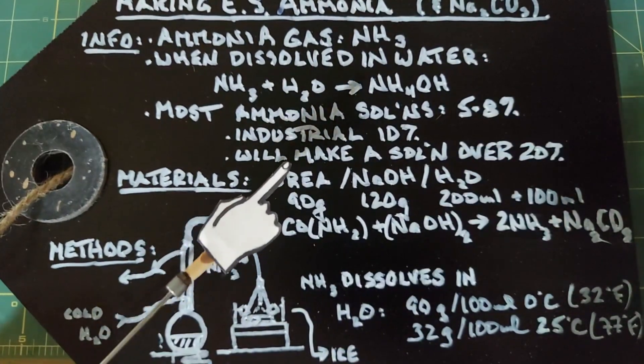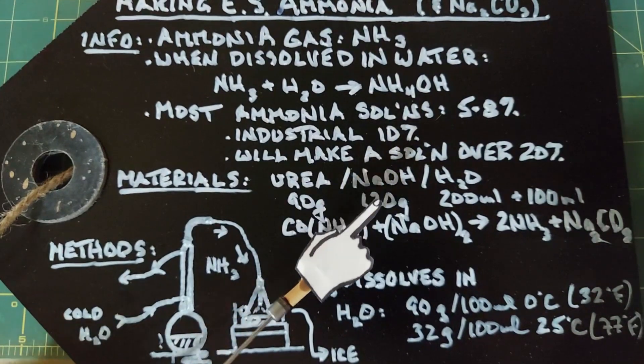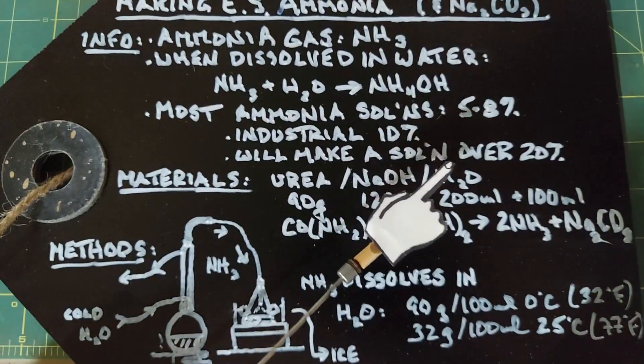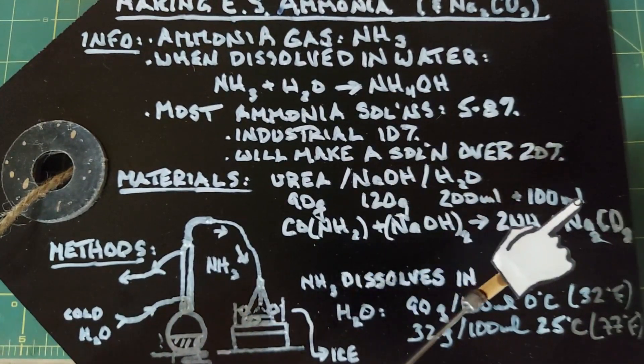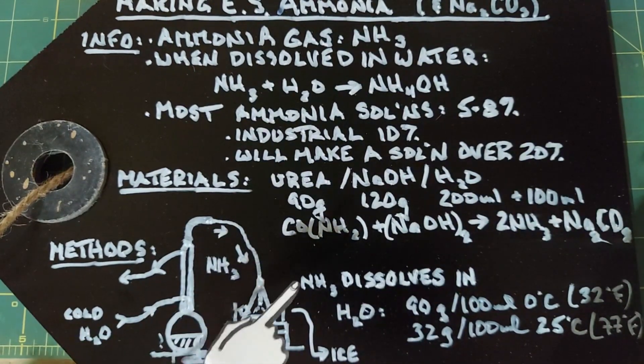Here's what we're going to use: urea 90 grams, sodium hydroxide 120 grams, and water 200 milliliters plus 100 milliliters. 200 is going to go here and 100 is going to go over here.